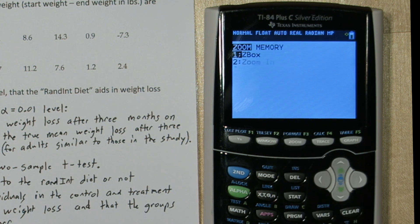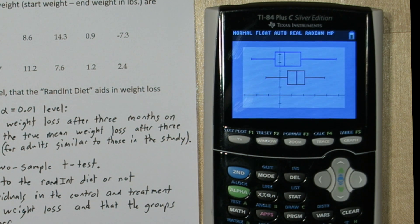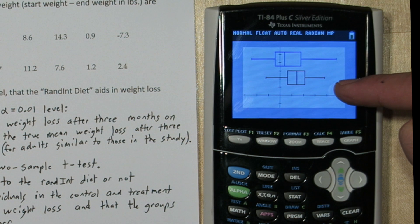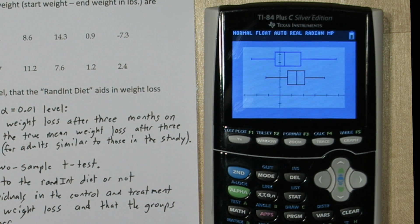Now when I press zoom 9, here's box plots of the weight losses for the control group and the treatment group. Now right away, we can see there's differences between the two groups. It looks like the treatment group did have a little more weight loss on average than the control group. But is this a statistically significant difference? That's what we're going to check in our test.